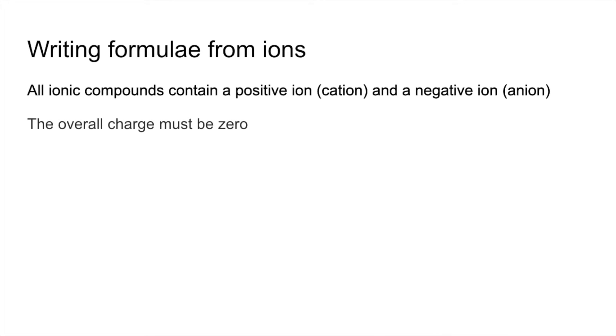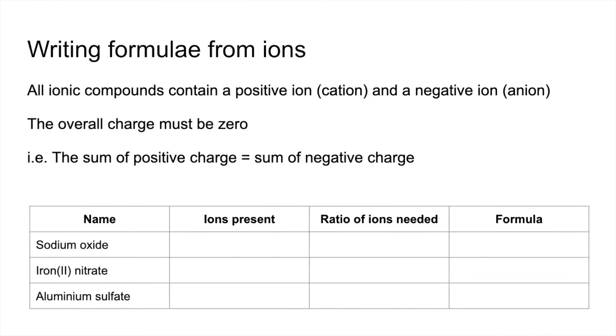So we'll just finish by explaining how to write the formulae from ions. These are the formulae of ionic substances. All ionic compounds contain a positive ion, that's what we call a cation, and a negative ion, an anion. The overall charge of the compound has to be zero. So in other words, the sum of the positive charge must equal the sum of the negative charge. We're going to look at these three examples here. The ions that are present, the ratio of ions needed to give an overall charge of zero, and then the formula.